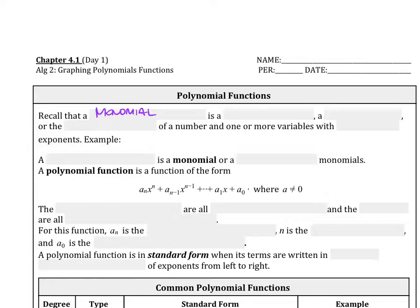is a number, a variable, or the product of a number and one or more variables with whole number exponents. So there's no negatives, it can't be a fraction, and so forth. It cannot be a variable either, so it has to be a whole number, which is positive numbers.